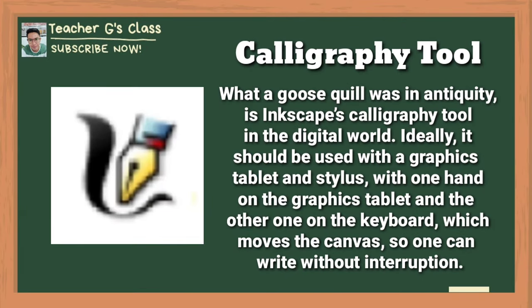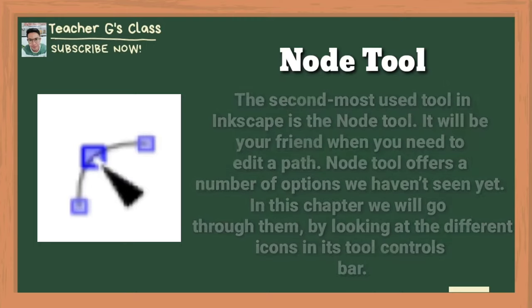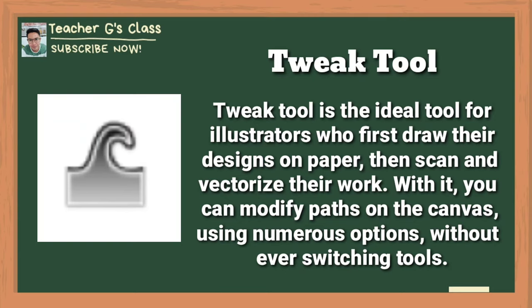The calligraphy tool — what a goose quill was in antiquity, Inkscape's calligraphy tool is in the digital world. Ideally it should be used with a graphics tablet and stylus, with one hand on the graphics tablet and the other on the keyboard, which moves the canvas so one can write without interruption. The node tool is the second most used tool in Inkscape — it will be your friend when you need to edit a path and offers a number of options seen through the different icons in the tool controls bar. The tweak tool is ideal for illustrators who first draw their designs on paper, then scan and vectorize their work; with it, you can modify paths on the canvas using numerous options without ever switching tools.